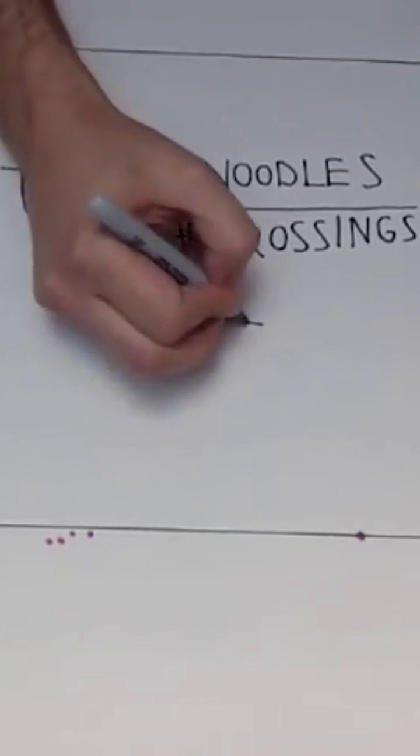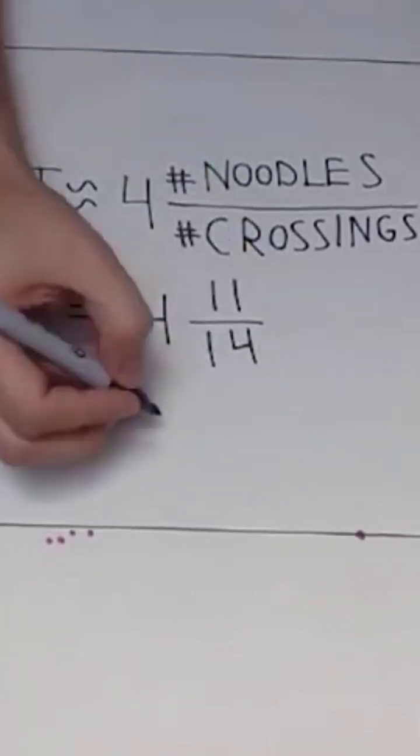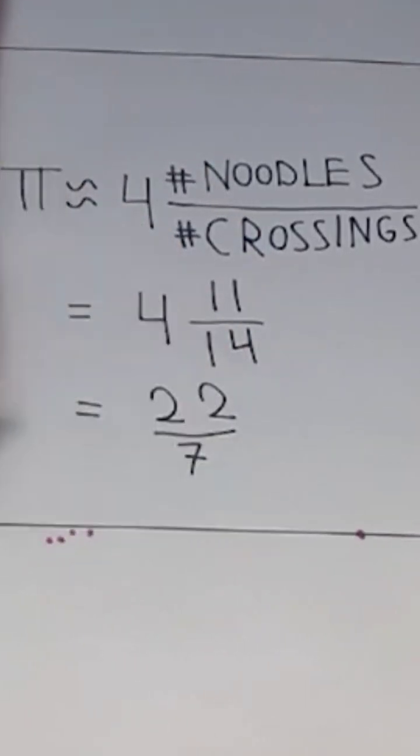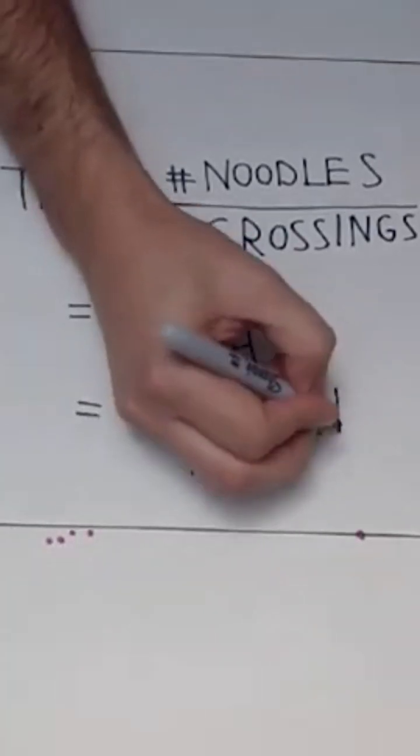In my case I threw 11 noodles and I got 14 crossings, so my estimate for pi works out to 22 over 7, or as decimals three...